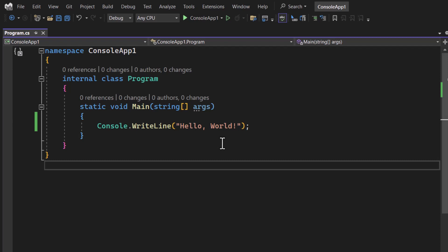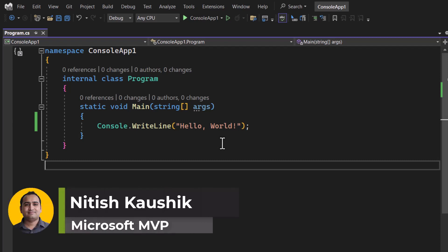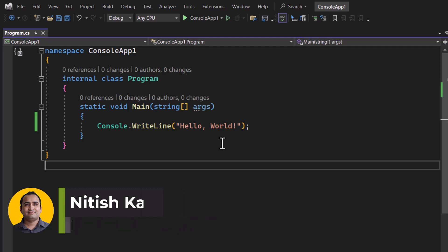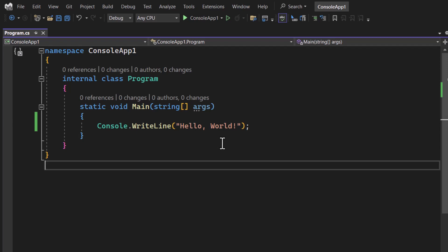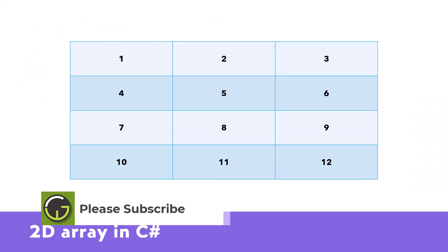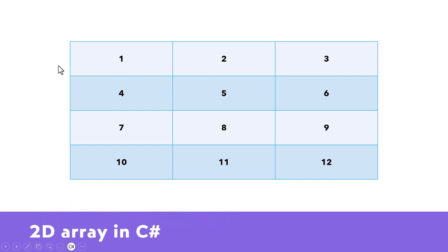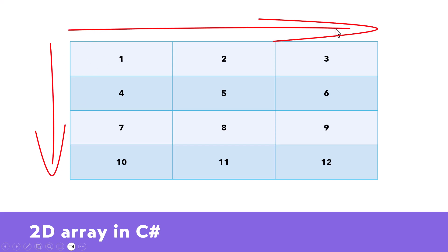So far in this course we are talking about single dimension arrays, but in reality arrays can be multi-dimensional — two-dimensional, three-dimensional, or more. Let's understand how to work with multi-dimensional arrays in C#. Here you can see a matrix with multiple rows and multiple columns. If I want to store this kind of data in a variable, we can store it in a two-dimensional array, because we have only two dimensions.